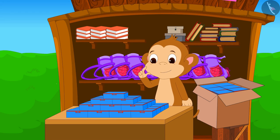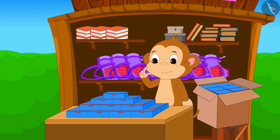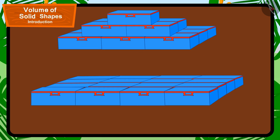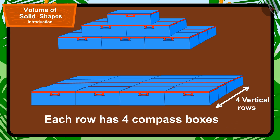Let's first figure out the number of compass boxes being used in this shape. The lowest layer of this shape has four vertical rows, and each row has four compass boxes. That means four rows multiplied by four boxes, that is sixteen boxes in the lowest layer.